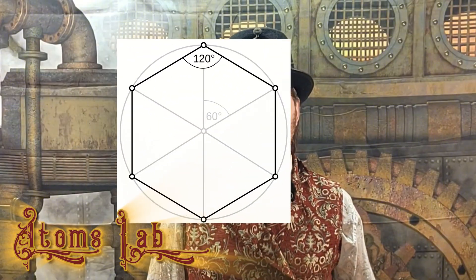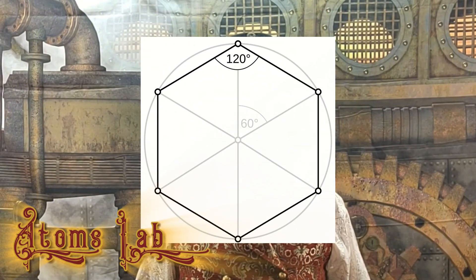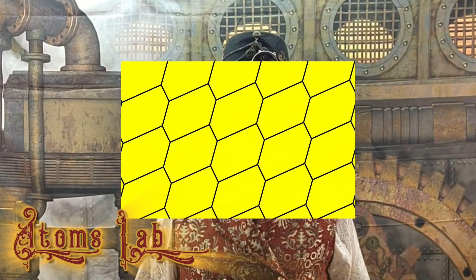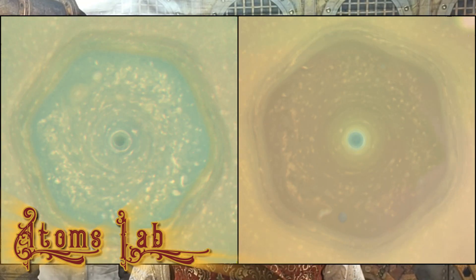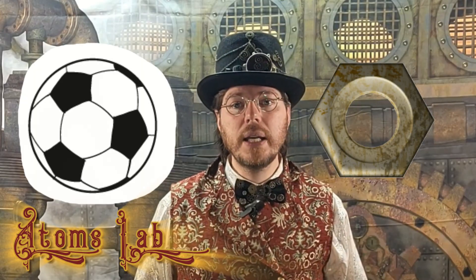Like pentagons, hexagons can be either regular or irregular. They're found all throughout nature, from honeycombs to hexagonal patterns of snowflakes. Even the planet Saturn has hexagon-shaped clouds near its north pole. This is because hexagons are really organized and can be compacted together without leaving any gaps or overlaps. Can you think of any hexagons that you've seen?